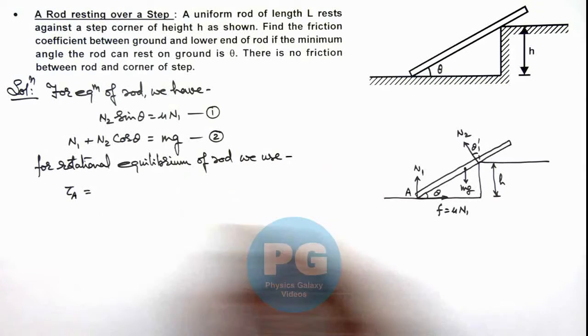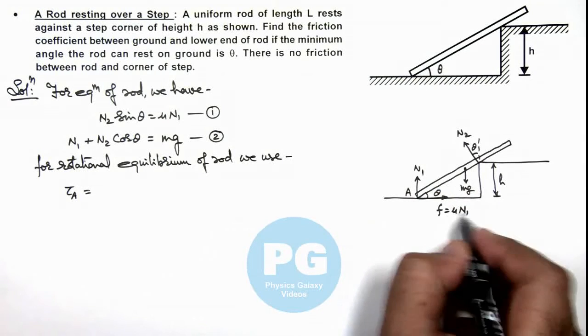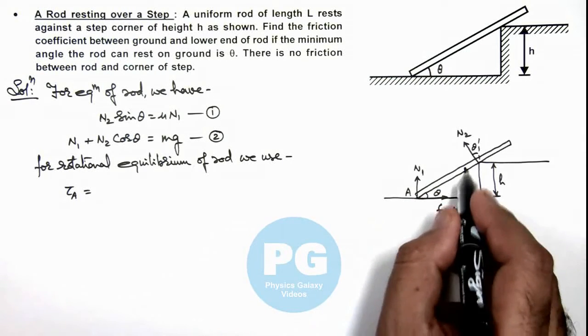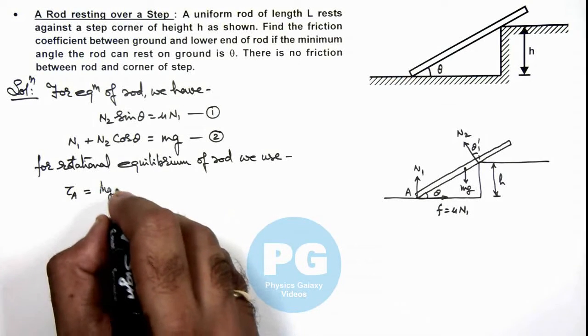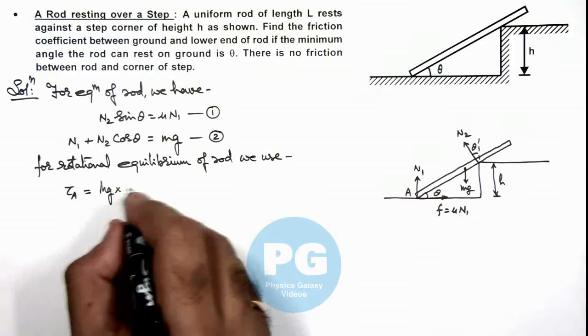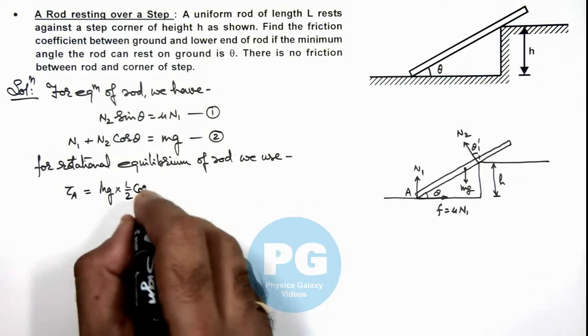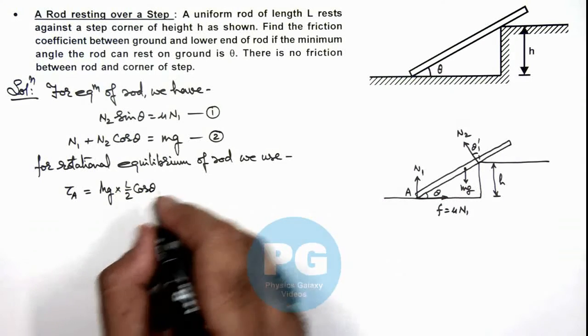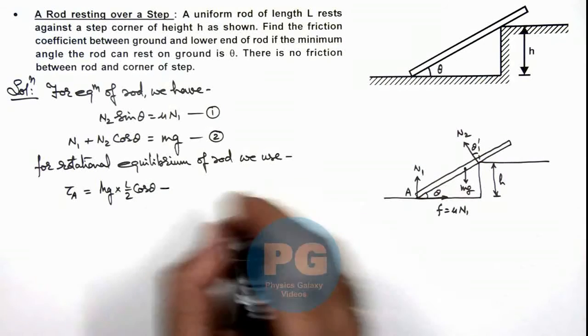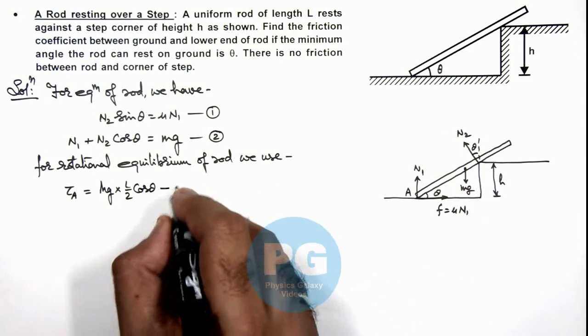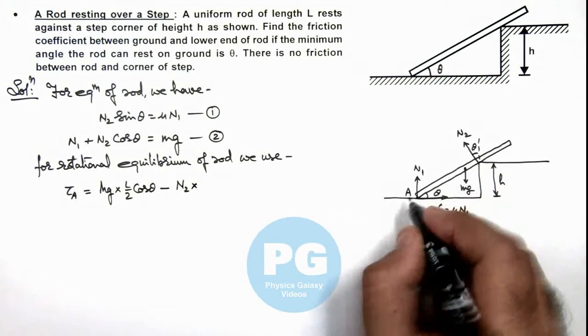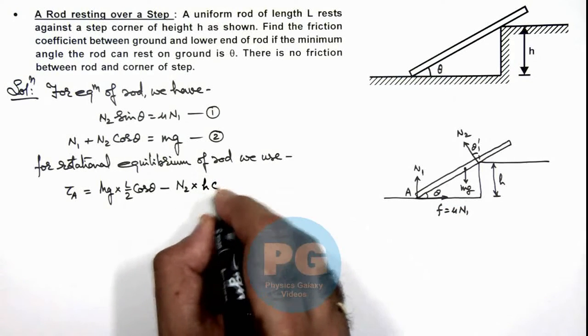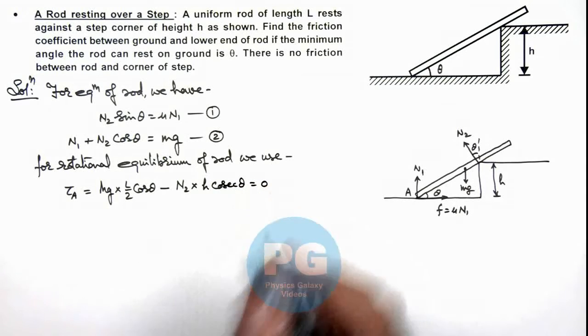As due to N1 and mu N1 the torque will be zero, and due to mg it is mg multiplied by this distance L by 2 cos theta, the torque due to mg, minus the torque due to this normal reaction which we can write as N2 multiplied by, if this height is h this will be h cosec theta. That is equal to zero.